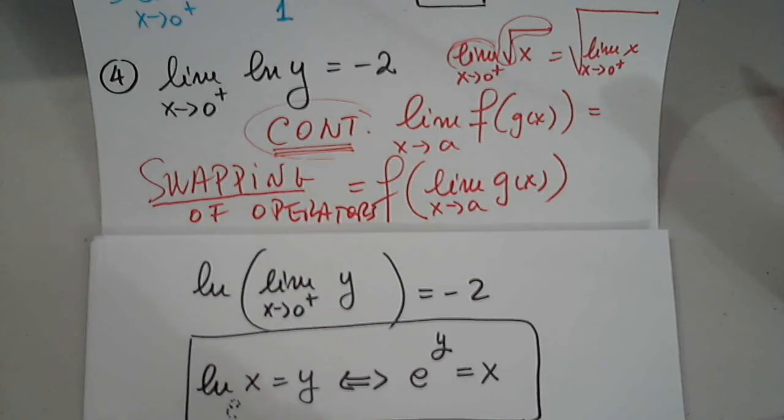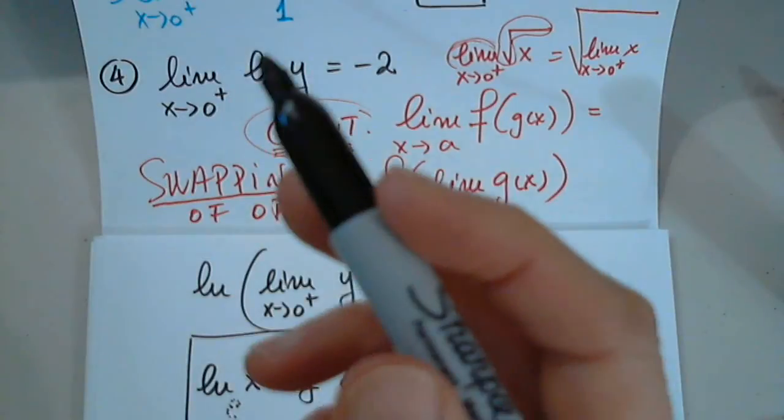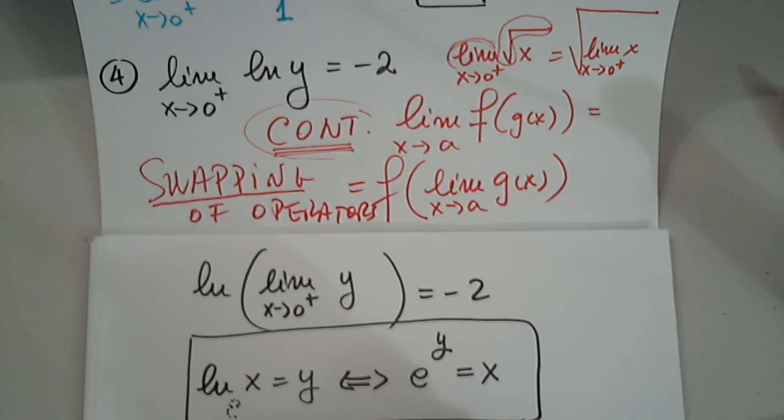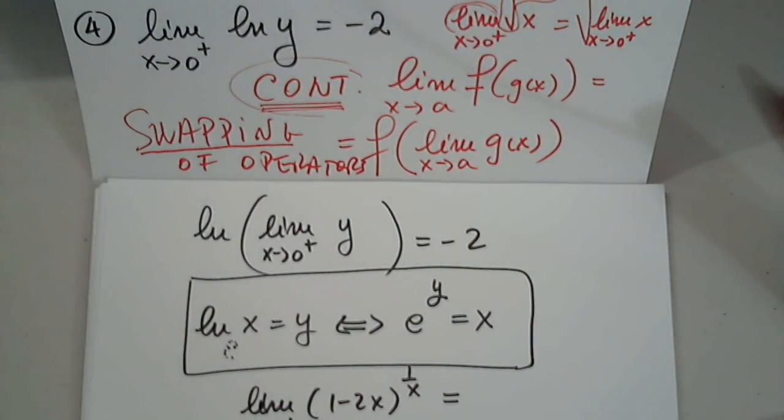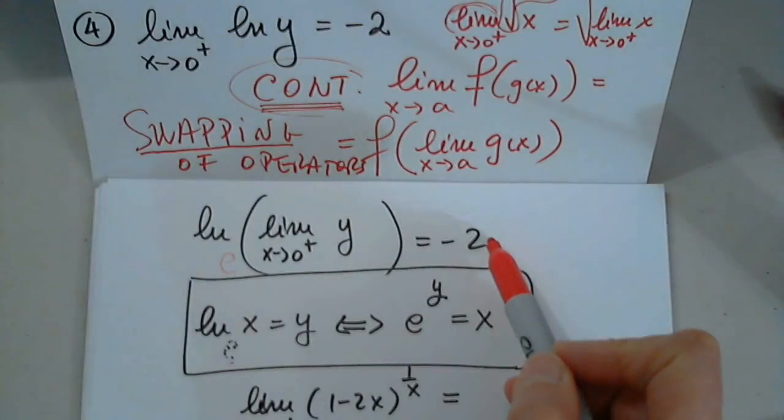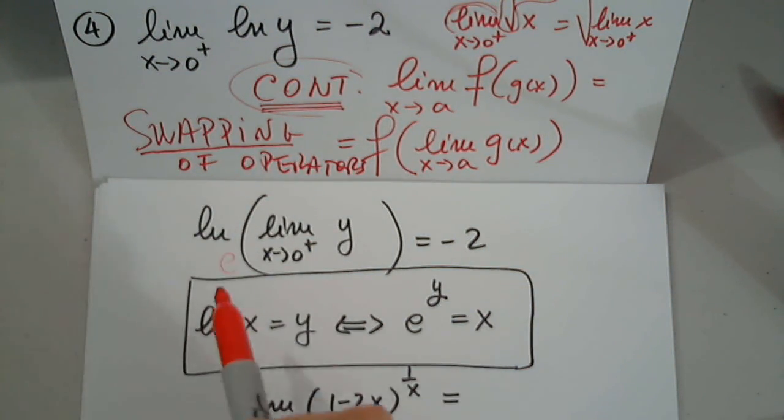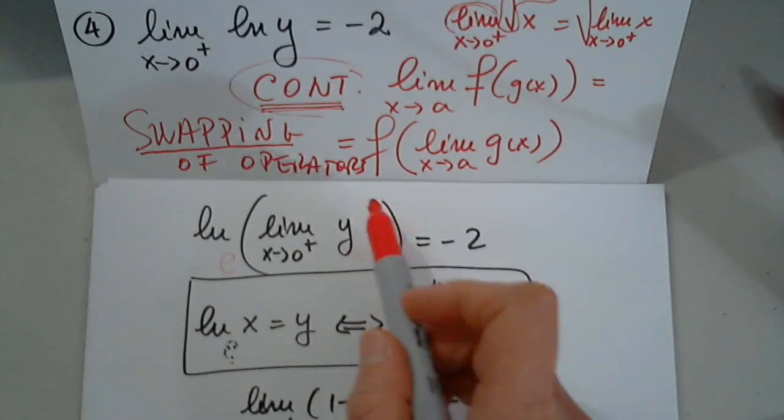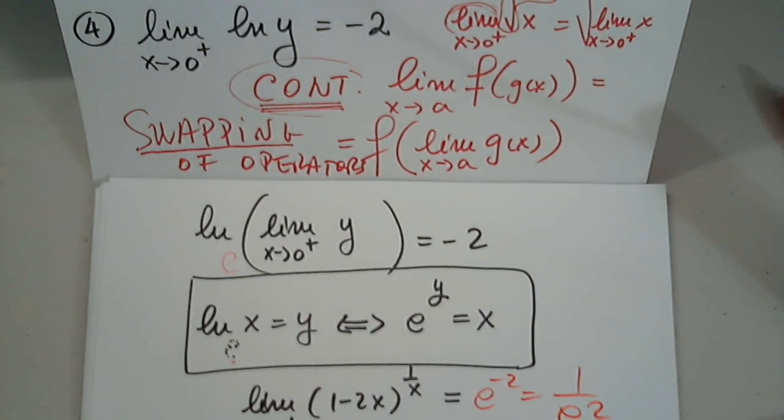So, knowing that, what will you say that the limit as x approaches 0 from the right of y, and I'm going to copy now, 1 minus 2x raised to 1 over x equals 2. So, based on what we just discussed, anyone? Does that equal to natural log of limit y? E raised to this power equals that. That's why I wrote it here. Oh. E raised to negative 2 equals this. And that's our answer.